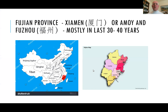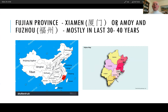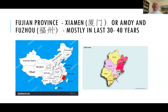More recently, in the last 30 to 40 years, there's been more immigration from a place called Fujian, which is the next prefecture north of Guangdong. The two main cities in Fujian are Xiamen — formerly called Amoy — and Fuzhou. A law passed in the 1890s forbade anyone from coming from China, cutting off immigration from Guangdong. It was only after World War II that immigration opened up again, and that's where a lot of these people came from.